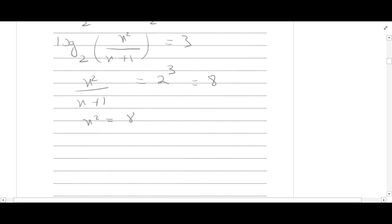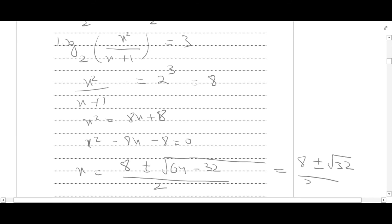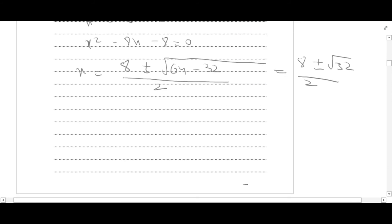This gives us the quadratic x squared equals 8 times (x plus 1), so x squared minus 8x minus 8 equals 0. Using the quadratic formula, x equals (8 plus or minus the square root of 64 minus 32) all over 2, which is (8 plus or minus the square root of 32) over 2. That simplifies to 4 plus or minus 2 root 2.